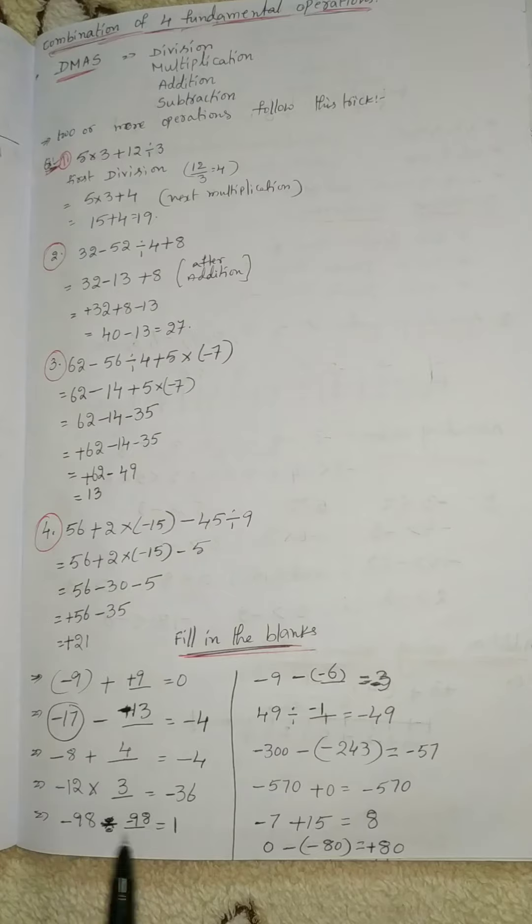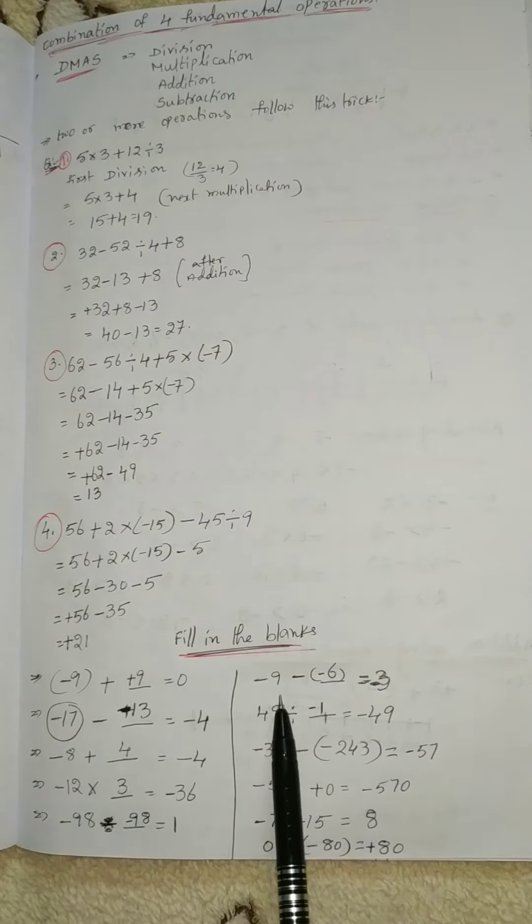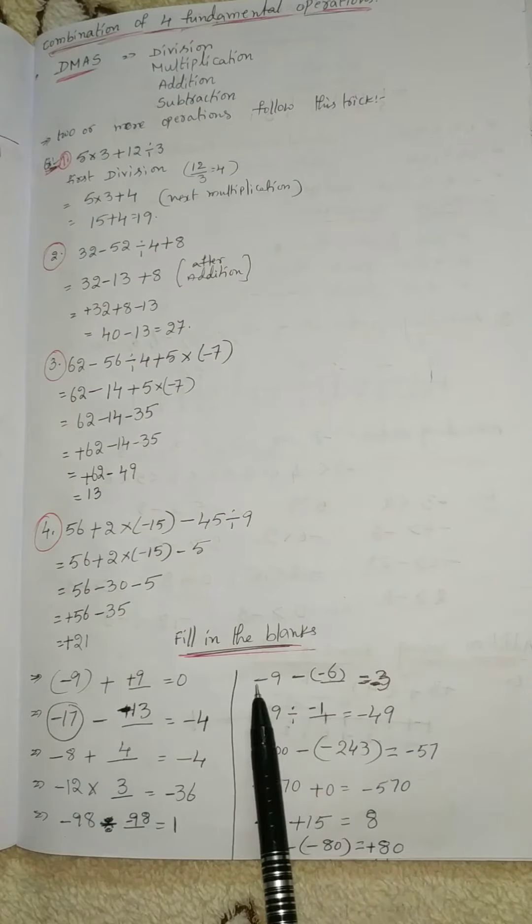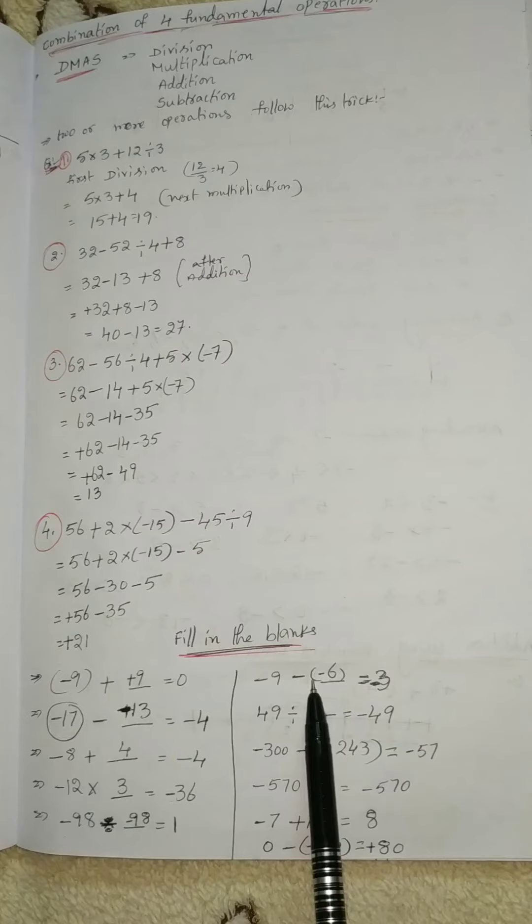-98 is the answer. Next: -9 minus -6 equals -3. It means minus times minus equals plus, so -9 plus 6 equals -3.